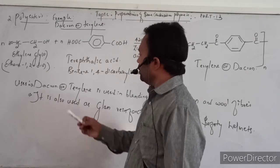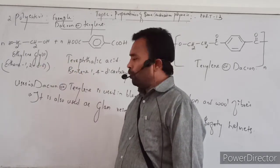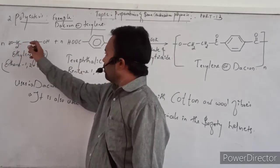N molecules of CH2OH-CH2OH, ethylene glycol, or it is also called ethane-1,2-diol, and N molecules of terephthalic acid.